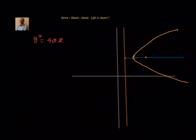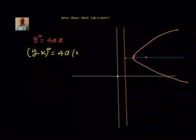Now, suppose the vertex of the parabola is at (h, k) but not at origin (0, 0), then it is given by (y − k)² = 4a(x − h), where (h, k) are the coordinates of the vertex.